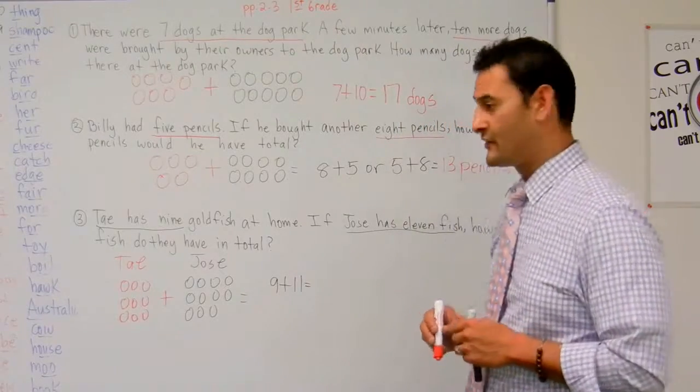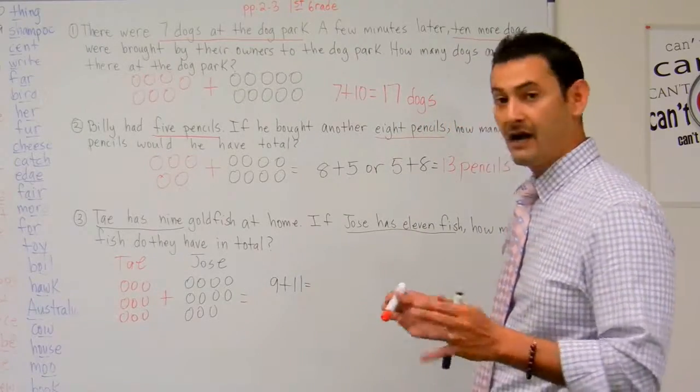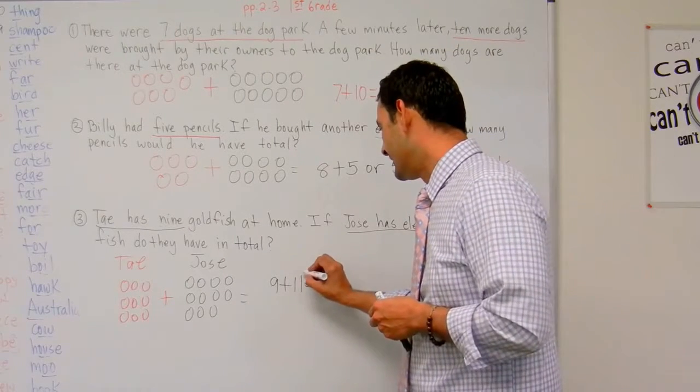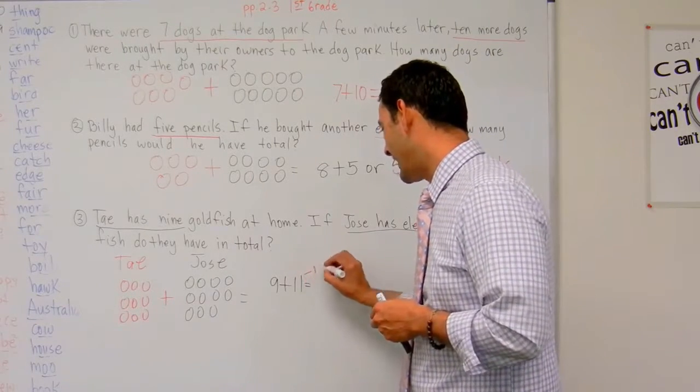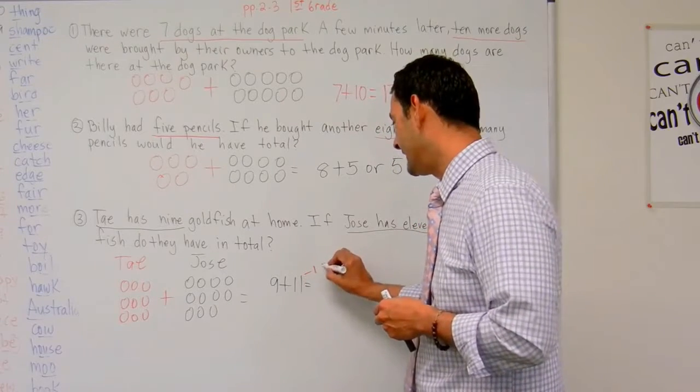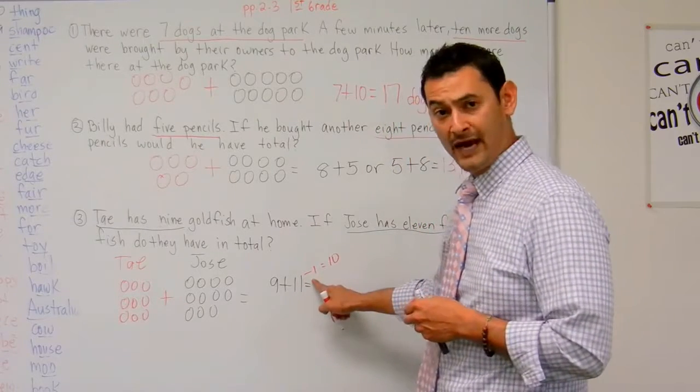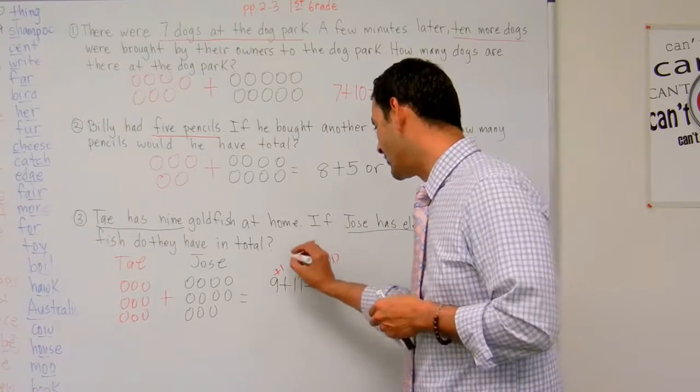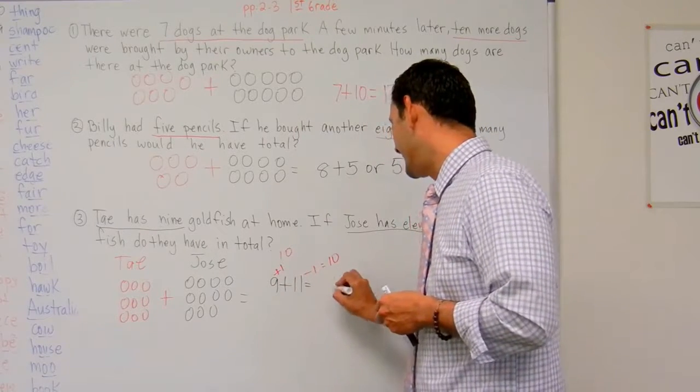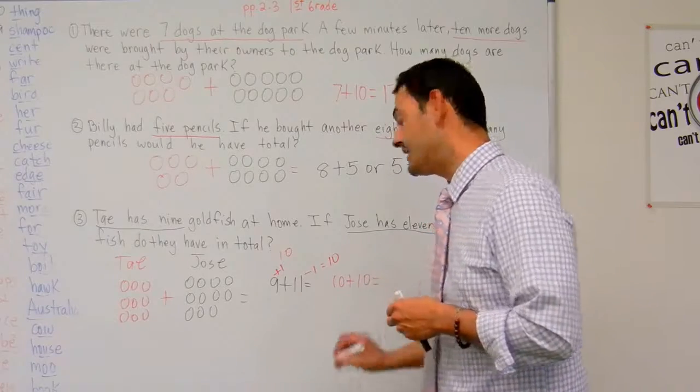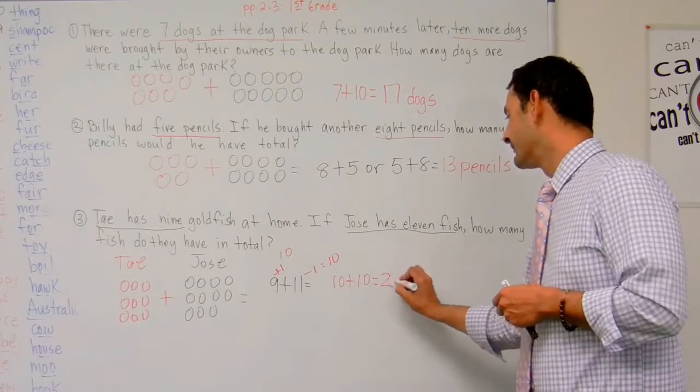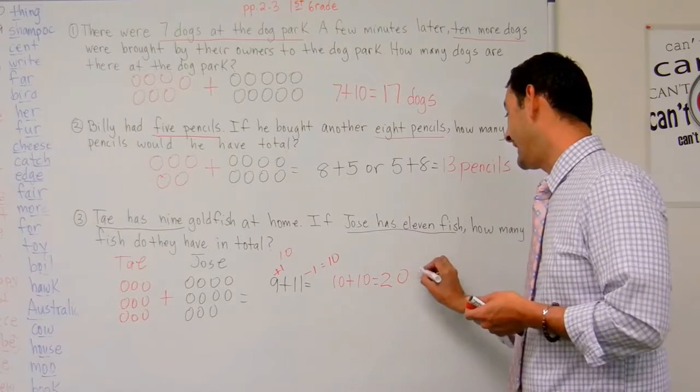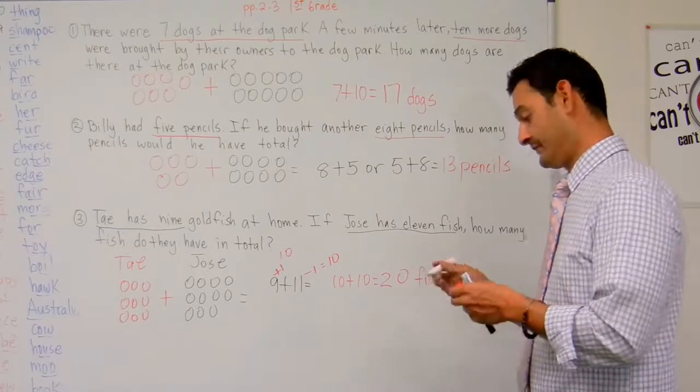So now what I'm going to do boys and girls is I'm going to use the compensation strategy. I'm going to make this into a 10. So how do I do that? By subtracting 1. 11 minus 1 equals 10. If I subtract 1 from here, I'm going to add 1 here. So now it's so much easier. Now it's going to be 10 plus 10 equals 20. So Tay and Jose have 20 fish.